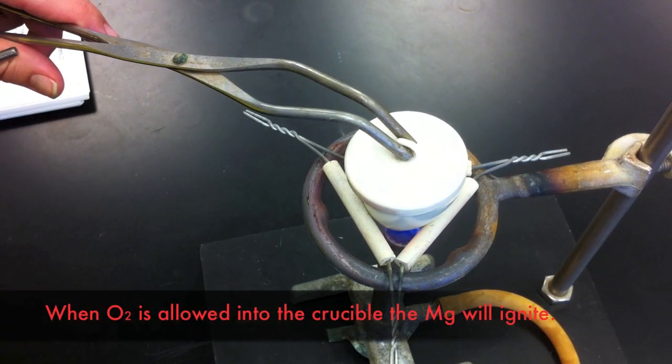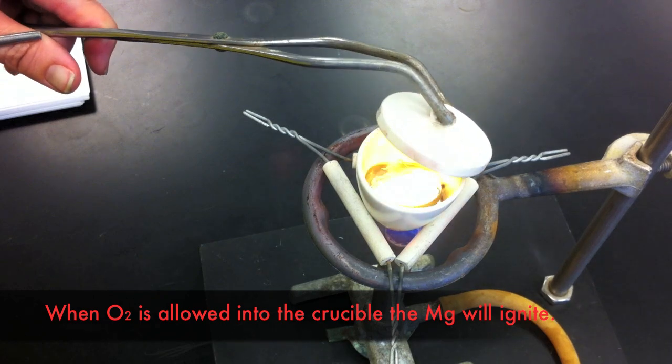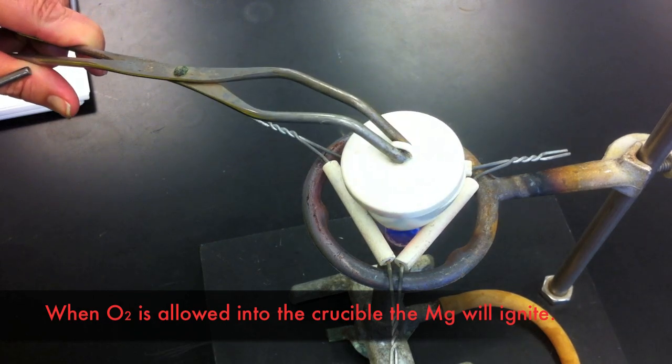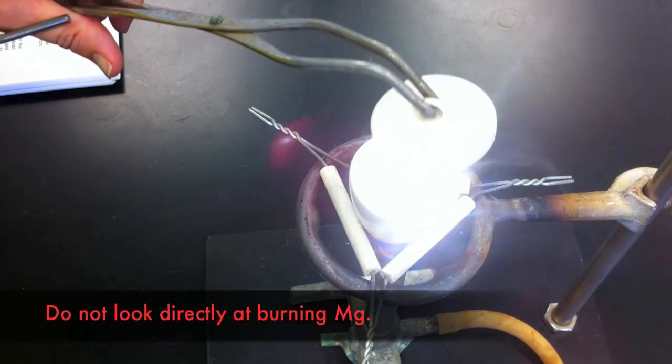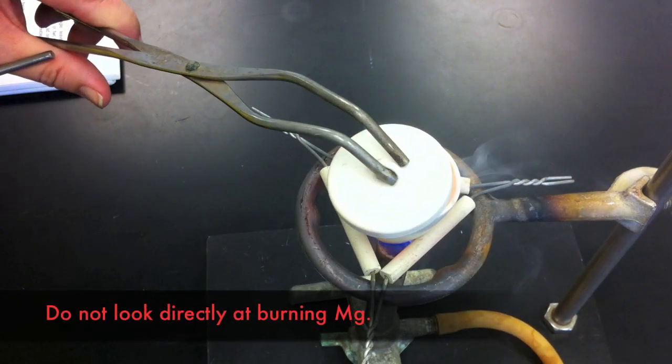Raising the lid of the crucible will allow oxygen from the air to enter the crucible. This will ignite the magnesium, causing the formation of magnesium oxide. Do not look directly at burning magnesium. The intense light can damage your eyes.